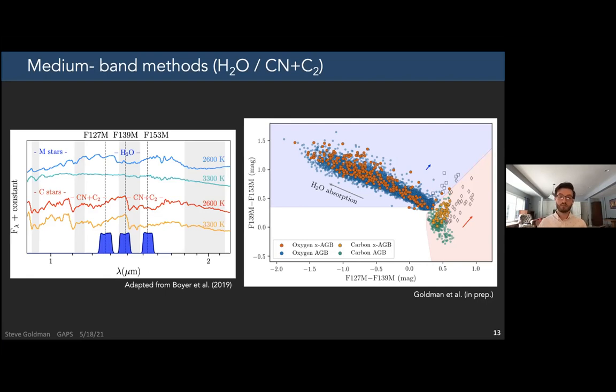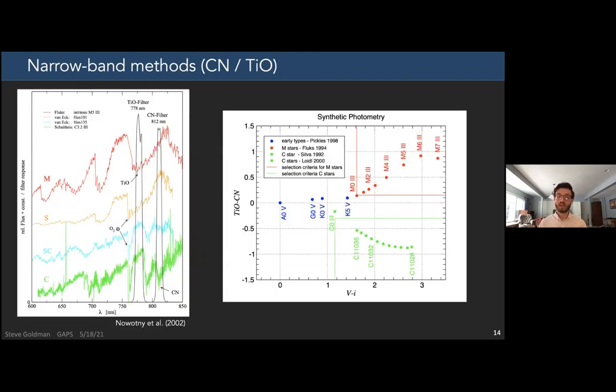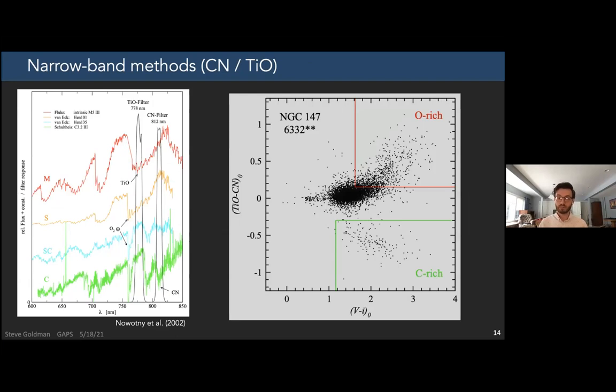Another method that's used to identify chemical types is using narrowband CN and TIO filters. This is using a similar strategy, similar idea where it has some degree of spectral typing due to the depth of these features, as you can see on this color-color diagram on the right. And when you plot the data, this is what you get. So these are two methods of identifying more of the characteristics of evolved stars.